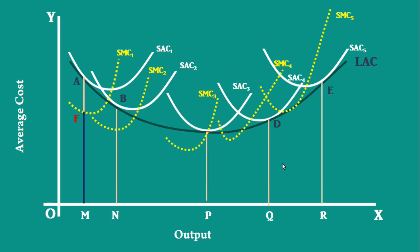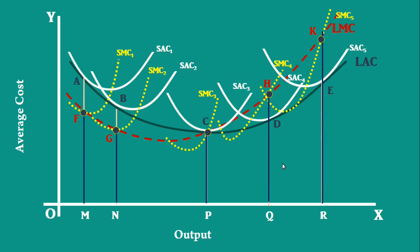NG, PC, QH, and RK are the marginal costs. By joining the points F, G, C, H, and K with a smooth curve, we get Long Run Marginal Cost Curve.